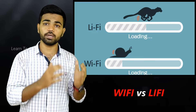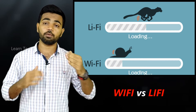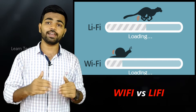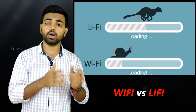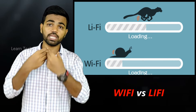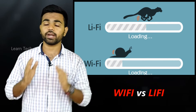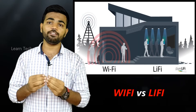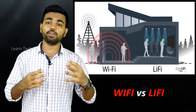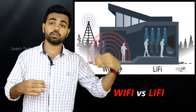First, obviously, speed — because in Li-Fi we use light. Wi-Fi uses radio, so frequency is less. Speed and security — in Li-Fi, radio signals cannot pass through walls, unlike Wi-Fi radio signals.